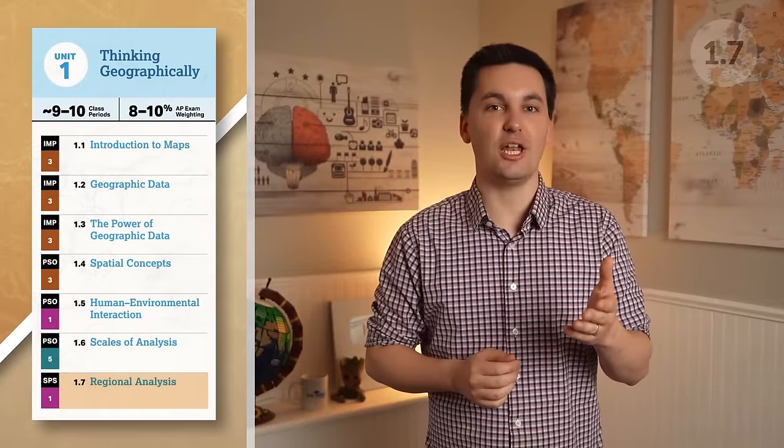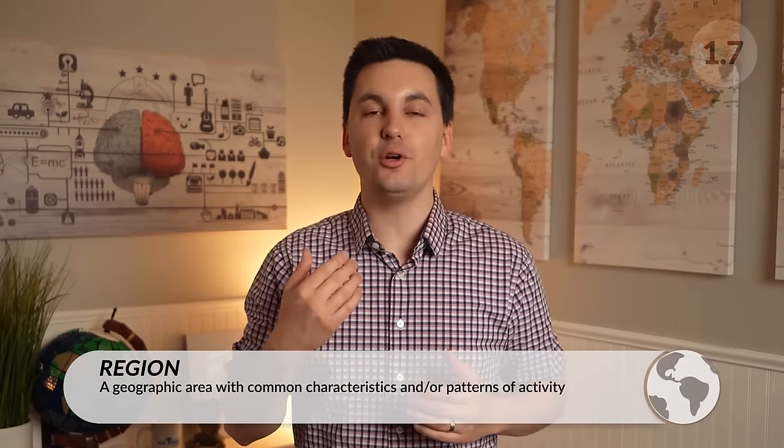Now moving on from scale of analysis to regional analysis, there are three main types of regions. A region is a geographic area defined by one or more unique characteristics or certain patterns of activity. Formal regions, also known as uniform regions, are geographic areas that have common attributes traditionally defined by economic, political, social, or environmental characteristics. For example, political boundaries in Latin America create formal regions that are states, or the Rocky Mountains create a formal physical region in the United States.